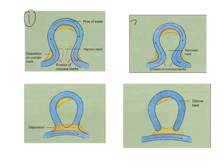Let's have a look at diagram number two, where the neck of the meander has been eroded much more. You can see what's going to happen during a flood when a river has most energy, high water levels, and lots of discharge.